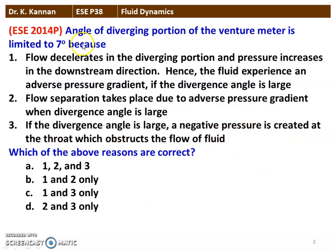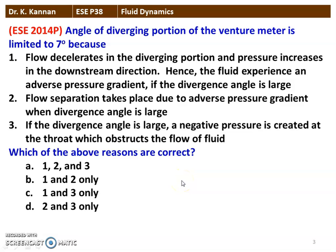The next question is from the 2014 question paper. The angle of the diverging portion of the venturimeter is limited to 7 degrees because the flow decelerates in the diverging portion and the pressure increases in the downstream direction. Hence, the fluid experiences an adverse pressure gradient if the divergence angle is large. Flow separation takes place due to the adverse pressure gradient when the divergence angle is large. If the divergence angle is large, negative pressure is created at the throat which obstructs the flow. The correct option is option B — statements 1 and 2 are correct; statement 3 is not correct.